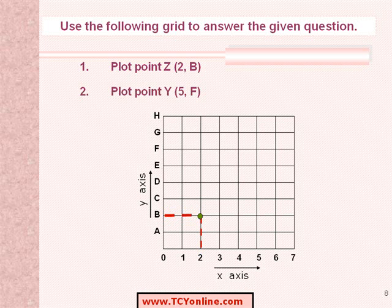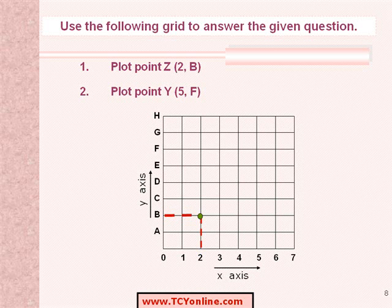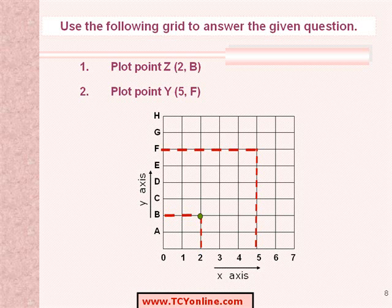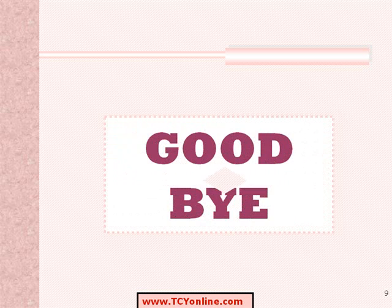Similarly, we are going to plot a point Y at coordinates (5, f). As 5 represents the position of point Y along the x-axis and f represents the position of point Y along the y-axis. Therefore, on extending a line from 5 and another line from f, we will find that these two lines meet at the plotted point. This brings us to the end of today's class. Hope you have enjoyed. Take care. Goodbye.